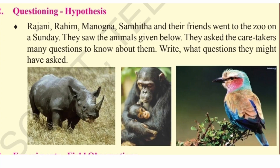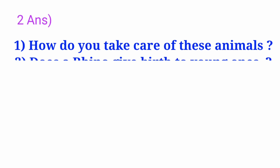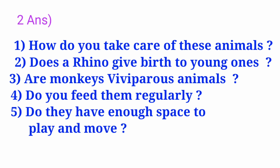Questioning Hypothesis: Rajini, Rahim, Manugna, Samhita and their friends went to the zoo on a Sunday. They saw the animals given below. They asked the caretakers many questions to know about them. Write what questions they might have asked. Answer: They might have asked — How do you take care of these animals? Does a rhino give birth to young ones? Are monkeys viviparous animals? Do you feed them regularly? Do they have enough space to play and move?